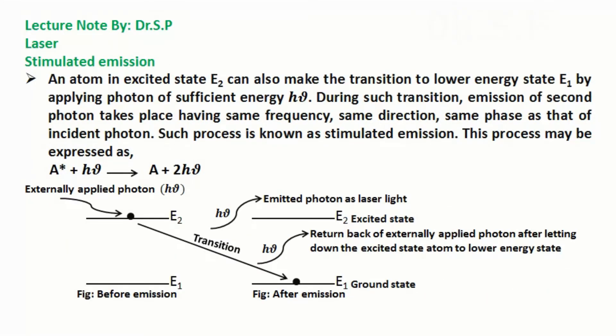Stimulated emission. An atom in excited state E₂ can also make the transition to lower energy state E₁ by applying photon of sufficient energy hν. During such transition, emission of second photon takes place having same frequency, same direction, same phase as that of incident photon.